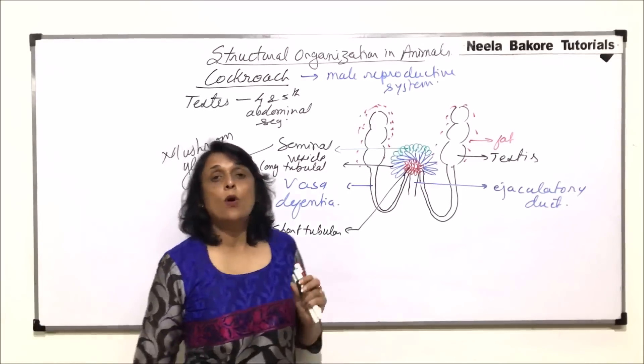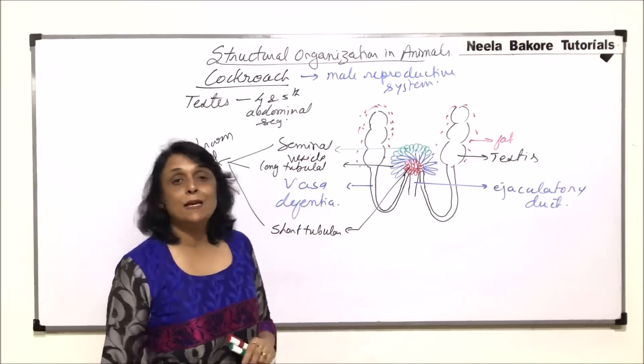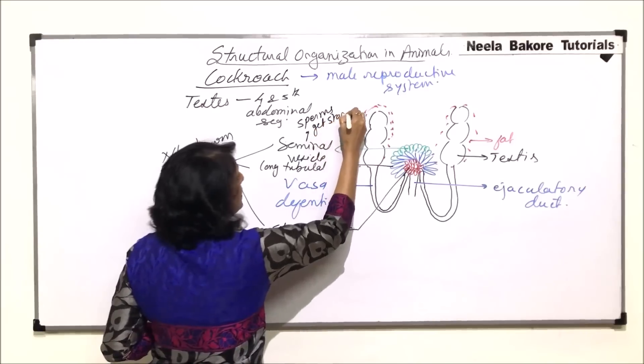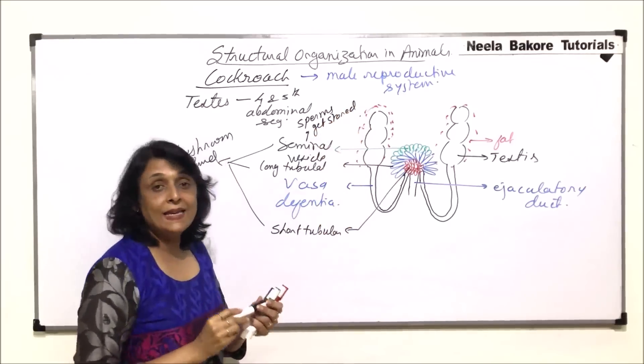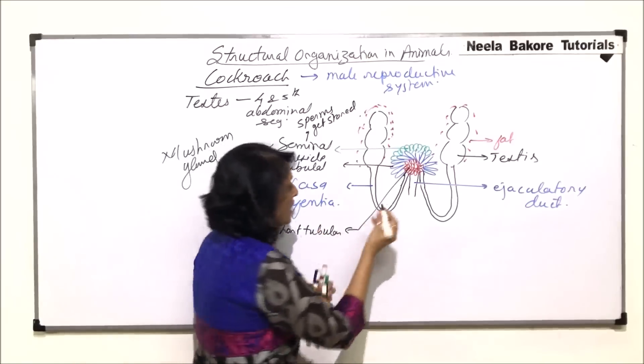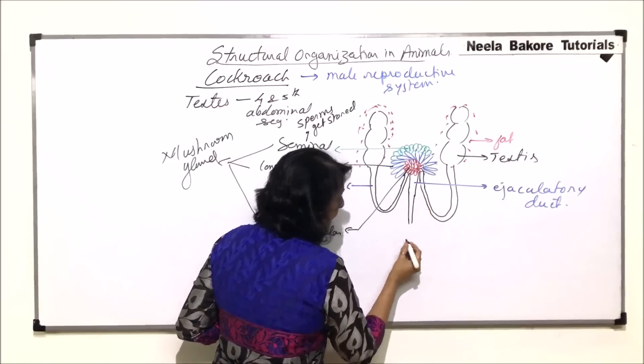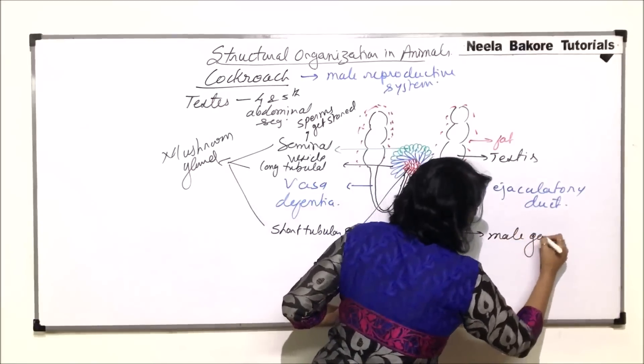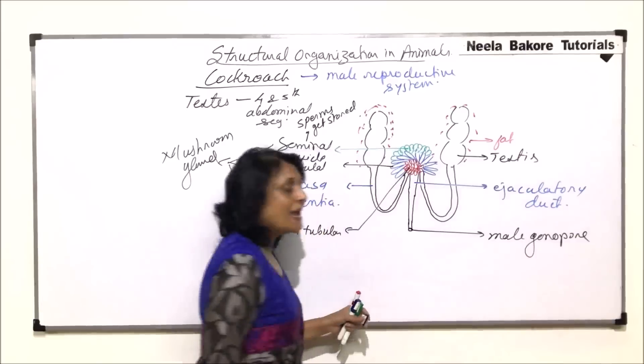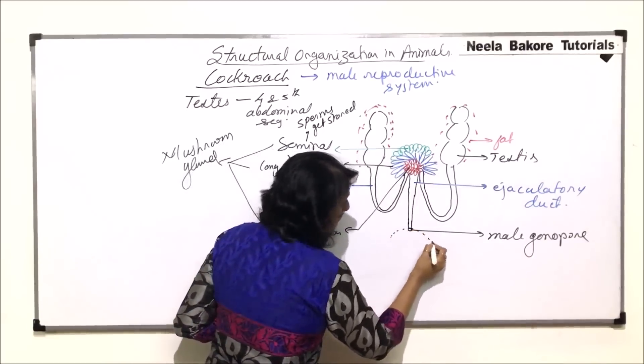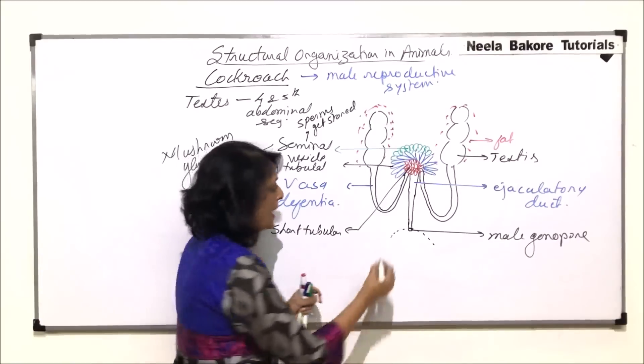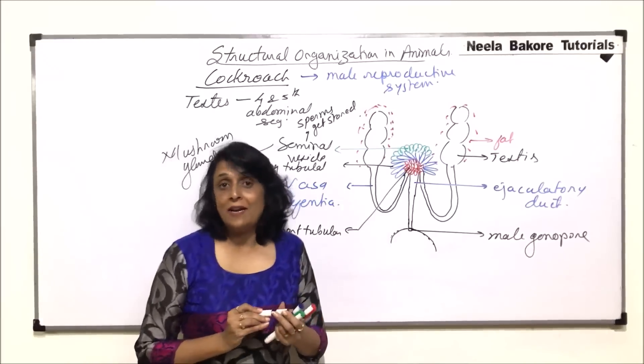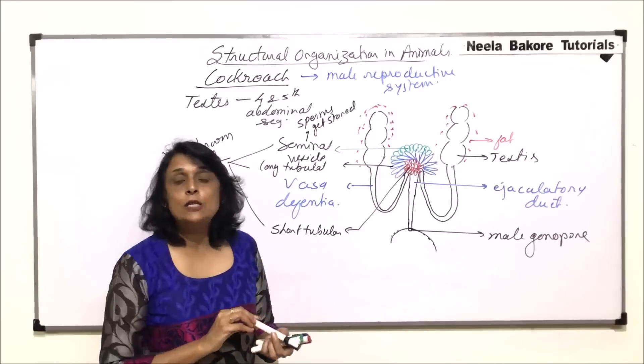So there are three parts, this would be the seminal vesicle, these are the long tubular part and the center is the short tubular part and these three things together make this mushroom gland. In seminal vesicle, the sperms are stored, so here sperms get stored till they are released during copulation. Now this ejaculatory duct, it descends and it opens through an opening which is called the male gonopore. This male gonopore is near the anal opening.